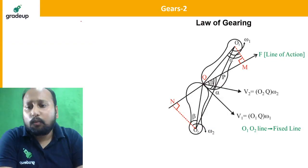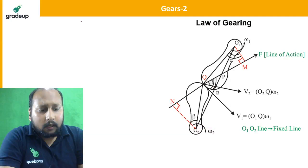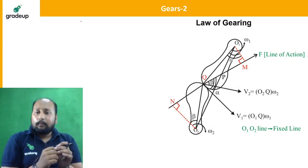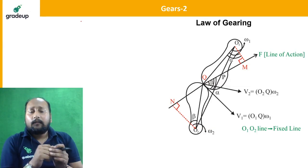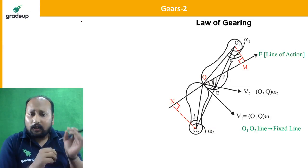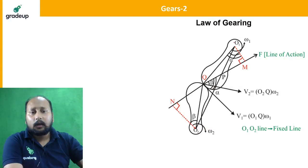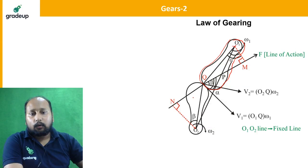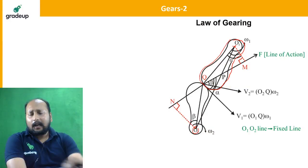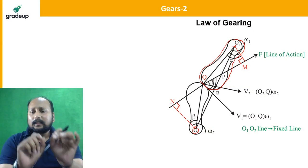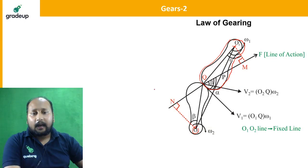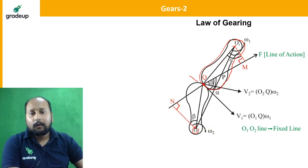Now, law of gearing — most students wonder what this is. For any two gears in mesh, this law must be satisfied. To understand how it works, let us assume there are two teeth: teeth number one with center O1, and teeth number two with center O2. They have a point of contact at point Q.